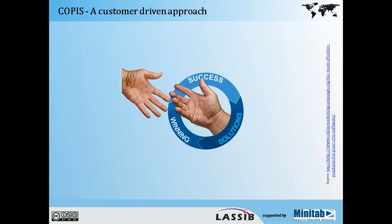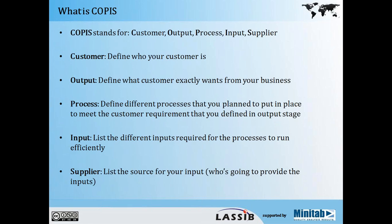COPUS stands for Customer, Output, Process, Input, and Supplier. Let's look at each one in more detail. The Customer is the end user of the goods or service we are delivering. Output is what the customer expects. The Process is how we deliver the output the customer wants. The Input is what the process needs to deliver that output. Don't worry if it's not so clear right now — we are going to look at a lot of examples which will help you understand what each one means in detail.